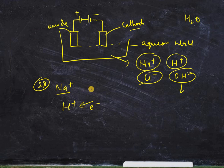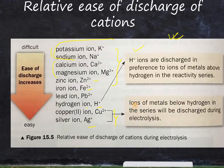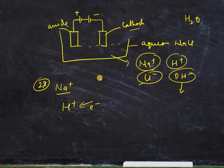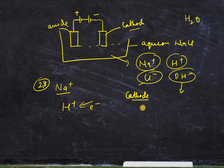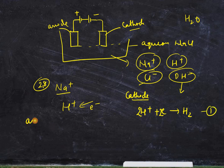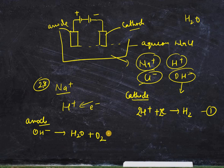At the cathode, the easy discharge will be H+, so the balanced equation is: 2H⁺ + 2e⁻ → H₂. At the anode, OH- is discharged giving the balanced equation: 4OH⁻ → 2H₂O + O₂ + 4e⁻.